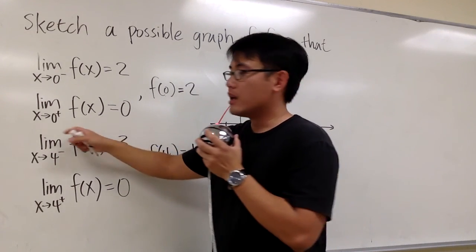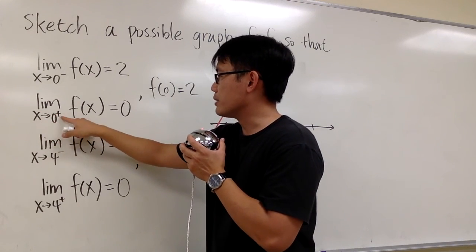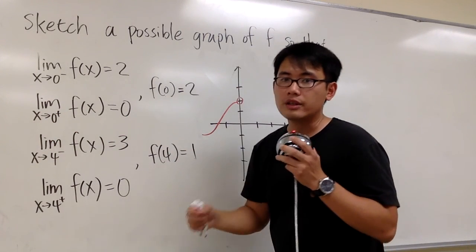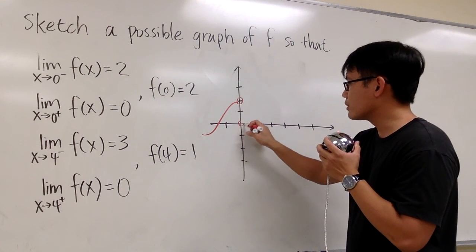Alright, let's do this one. You see, we have a limit statement. x is approaching to zero plus, and then the y value is zero. So let me put down zero, zero, with an open circle, like that.